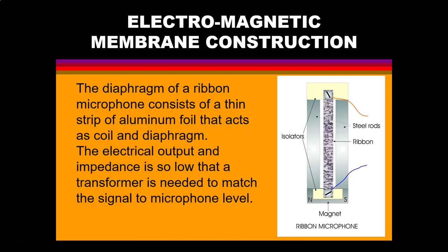The ribbon microphone consists of a thin strip of aluminum foil that acts as both a coil and a diaphragm simultaneously. The electrical output and impedance of this microphone is so low that a transformer is needed to match the signal to microphone level. The diaphragm of the ribbon microphone is extremely sensitive, and if you put a very loud sound in front of it, you will permanently destroy or distort the ribbon and cause permanent damage to the microphone.